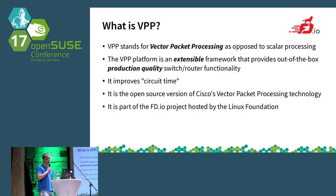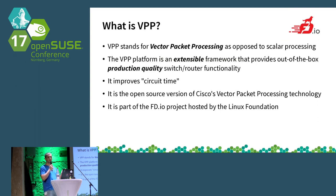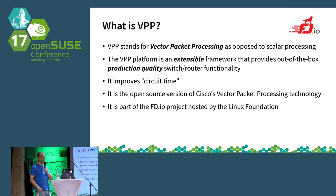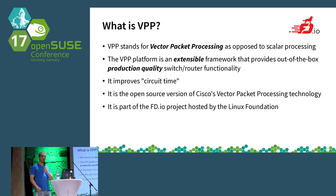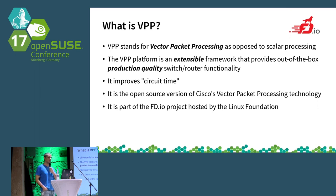VPP stands for Vector Packet Processing — as the name says, opposed to scalar processing. It's an extensible framework that offers production-quality switch and router functionality. The reason it's production quality is that VPP comes from many years of learning and development by Cisco, who donated this software to the open source community about 18 months ago. They had been using it in their products for many years, so it's very stable and production-tested.